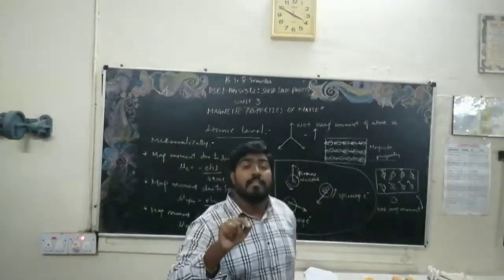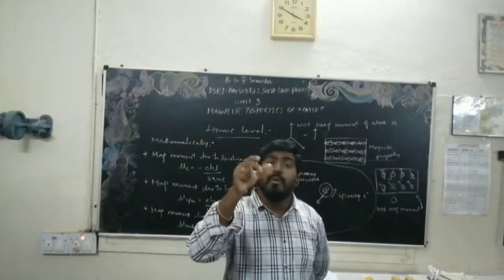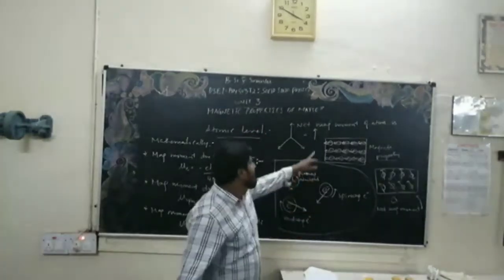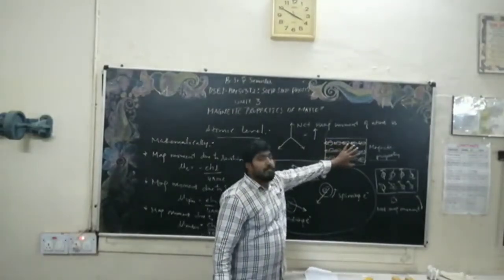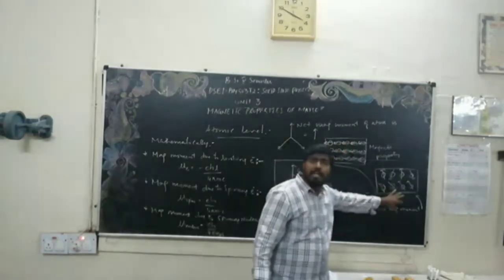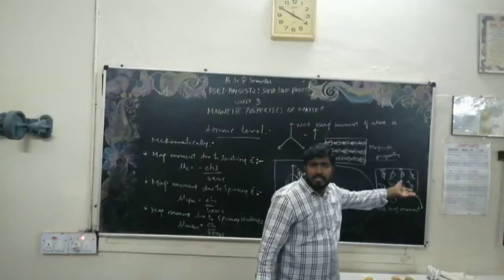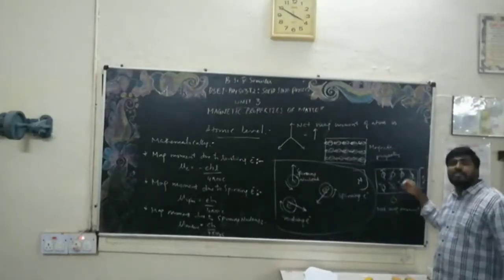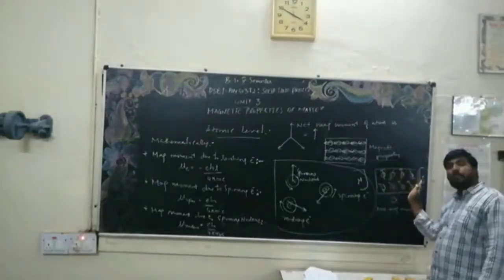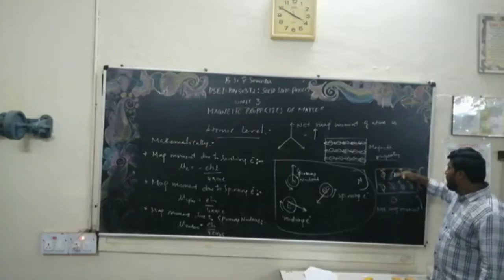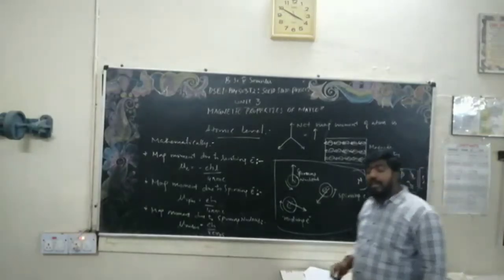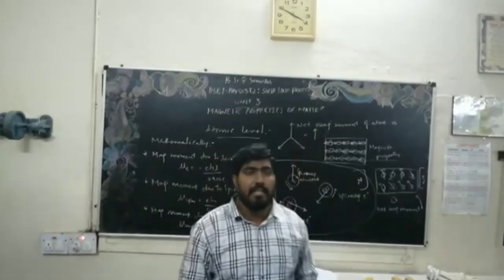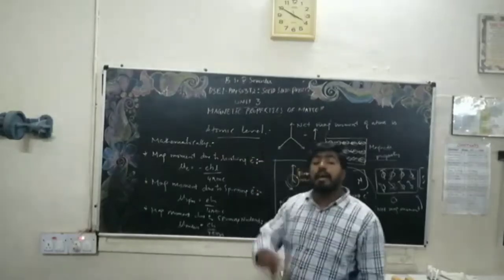Inside the atom there is spinning of the electron, revolving of the electron, and spinning of the nucleus, giving the net magnetic moment of one atom. If we keep a material under an external magnetic field, even the randomly oriented magnetic moments start aligning in one direction. This means even a non-magnetic material can be made to show magnetic properties by inducing an external magnetic field.